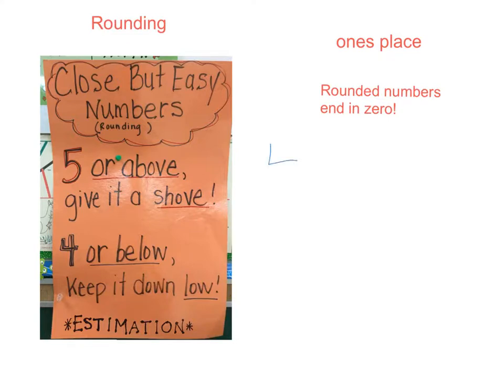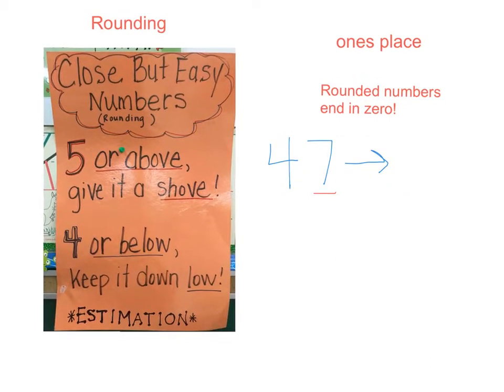Let's start with the number forty-seven. If we want to round that to the nearest ten, we want to look at the digit in the ones place. In the ones place, there's a seven, so remember our poem. Five or above, give it a shove. Four or below, keep it down low.